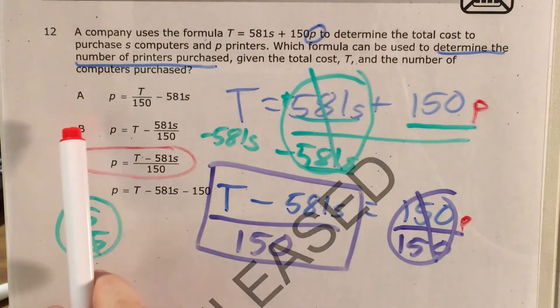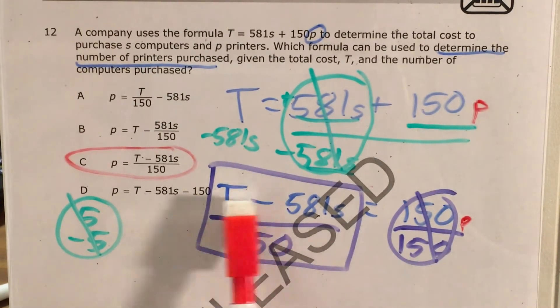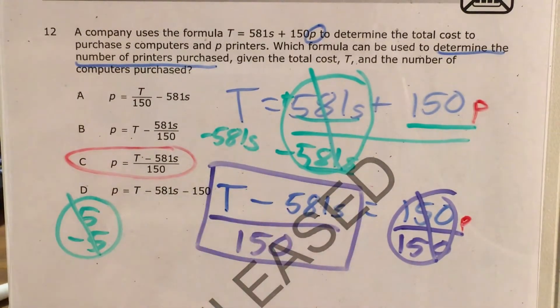Now, you might be thinking, why is it not choice B? Well, the answer is, because if we divide one side of an equation by 150, we have to divide the entire thing by 150.